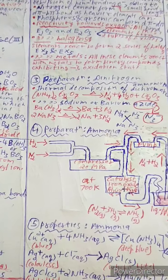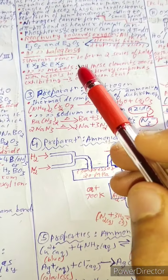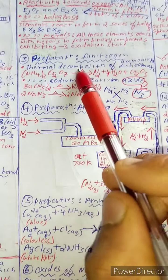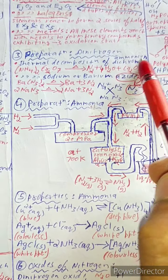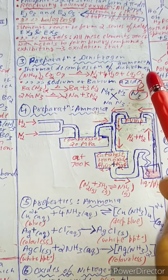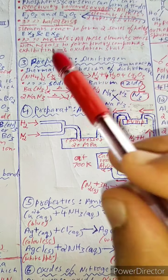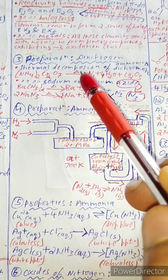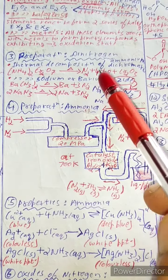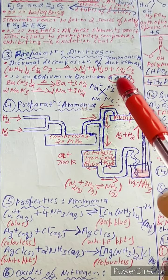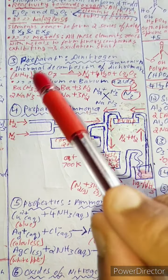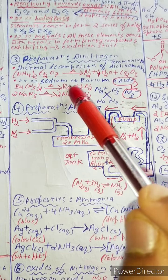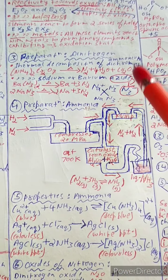Properties of dinitrogen: thermal decomposition of ammonium dichromate gives nitrogen, 4H₂O, and chromate. Thermal decomposition of sodium or barium azide is another method of preparation.